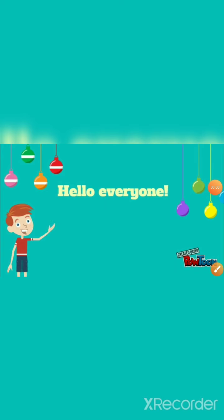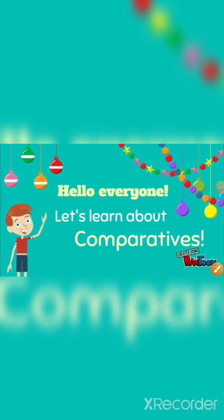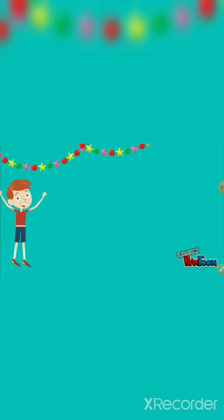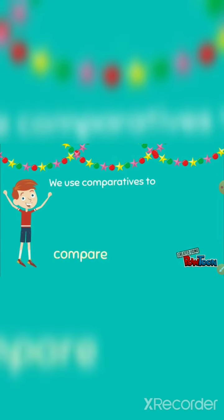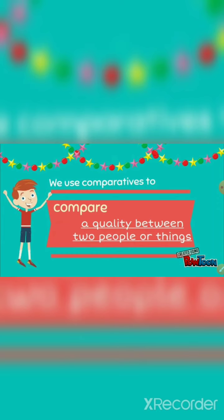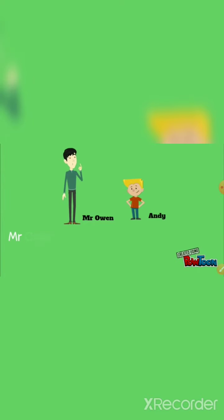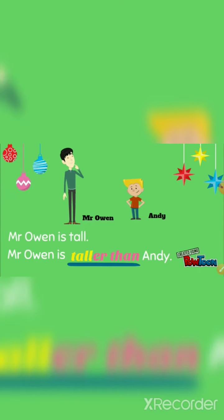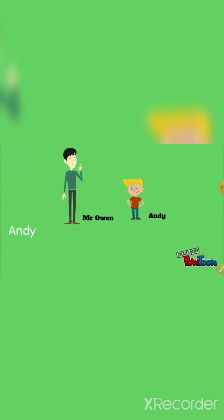Hello everyone, let's learn about comparatives. We use comparatives to compare quality between two people or things. For example, Mr. Overan is tall — Mr. Overan is taller than Andy. And Andy is short — Andy is shorter than Mr. Overan.